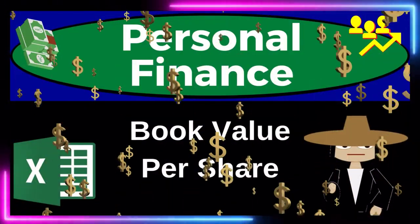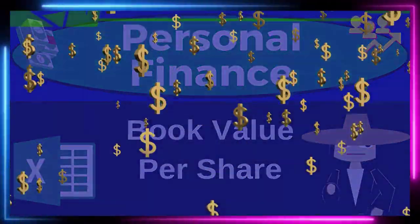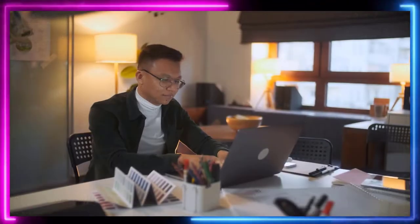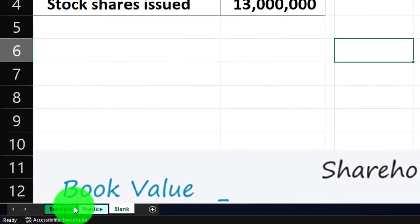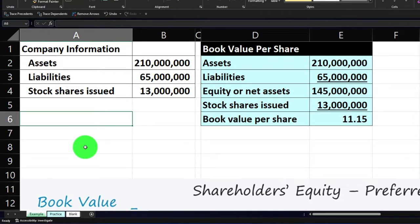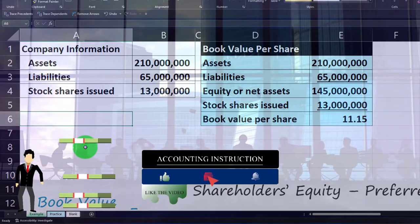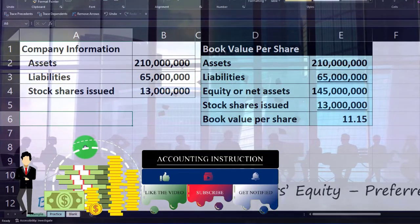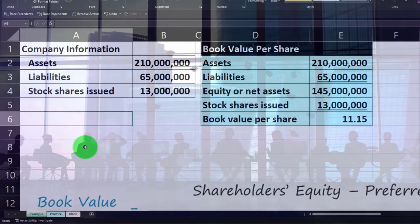This is a personal finance practice problem using Excel for book value per share calculation. Prepare to get financially fit by practicing personal finance. We're in our Excel worksheet analyzing a corporation — a separate legal entity — that breaks ownership into equal units called stocks. We're usually thinking about publicly traded companies trading on a public exchange.